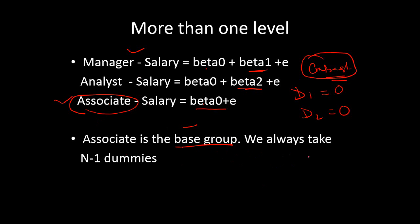Remember: we always take n−1 dummy variables, where n represents the number of categories. So we use only n−1 dummy variables to model categorical variables in a regression model.